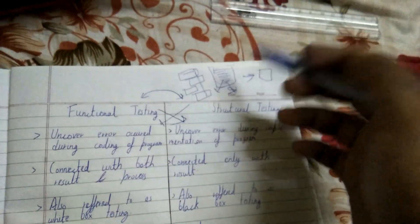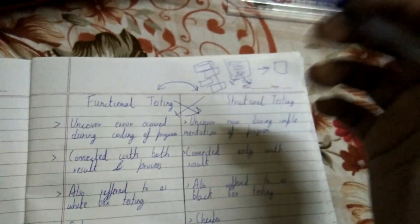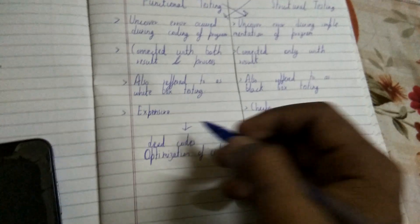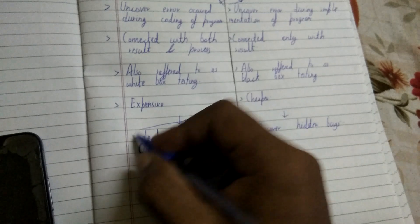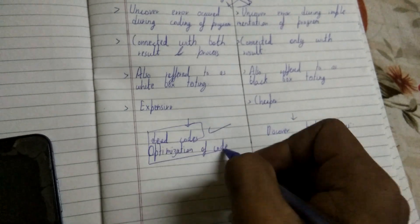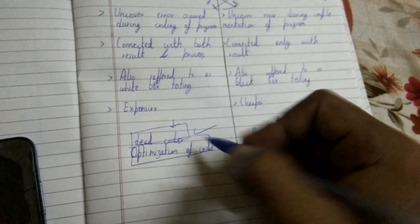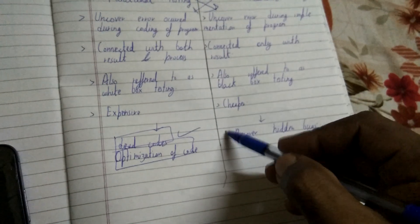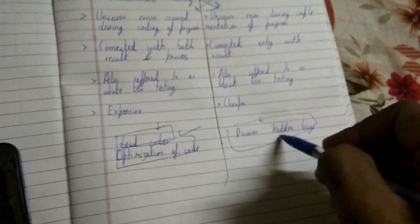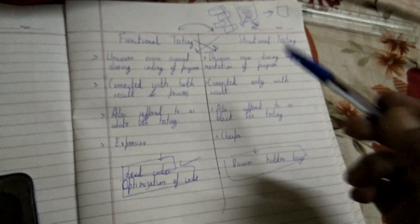For functional testing, the tester does not need proper internal knowledge — anyone can test it. A user can just come with a set of inputs and check whether it gives the desired output or not. Structural testing has features like discovering dead code in the program, enabling code optimization by replacing redundant code with fewer lines, and discovering hidden bugs that were not noticed by the developer.